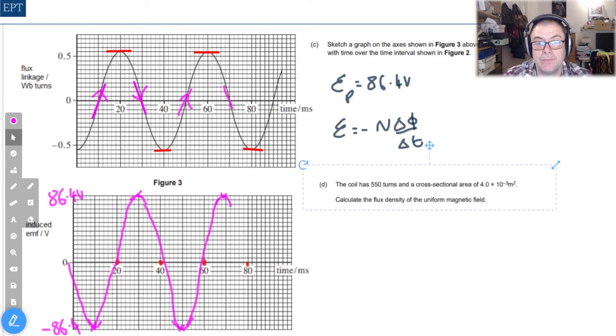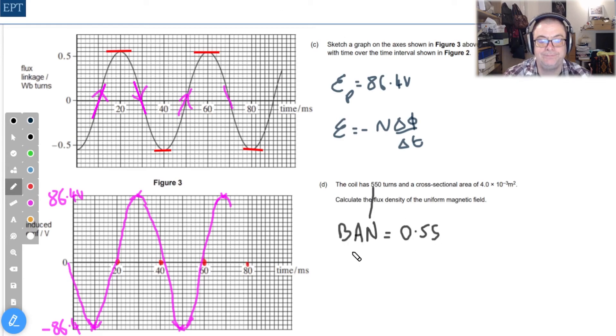Last part we've been asked to calculate the flux density, in other words B. We know the coil has 550 turns and we also know that our maximum value of B A N is going to be 0.55.